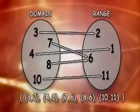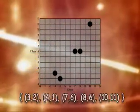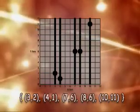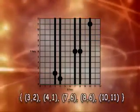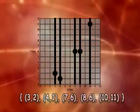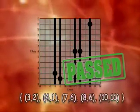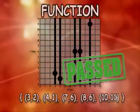Here's our original function. If we put this function on a graph and draw vertical lines through the points, we can see that no vertical line intersects the graph set more than once. It passes the vertical line test. It's a function.